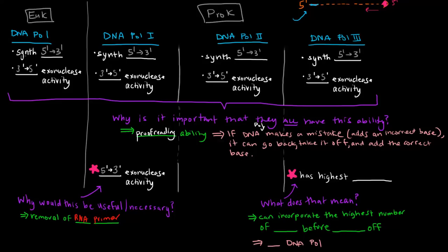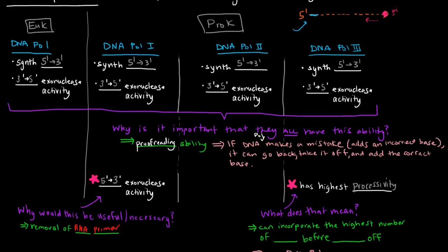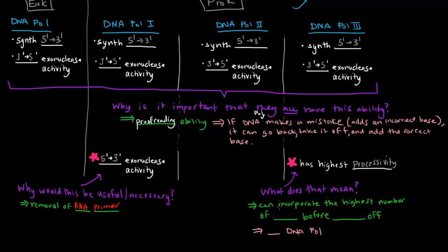So DNA polymerase 3 has the highest, what we call, processivity. Processivity. What does that mean? What that means is that it can incorporate the highest number of DNTPs before falling off.